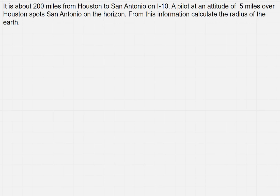It is about 200 miles from Houston to San Antonio on I-10. A pilot at an altitude of 5 miles over Houston spots San Antonio on the horizon. From this information, calculate the radius of the Earth.